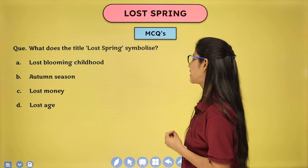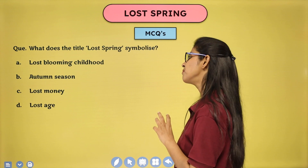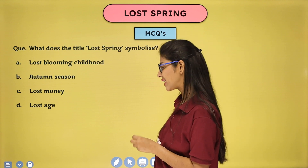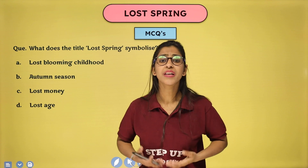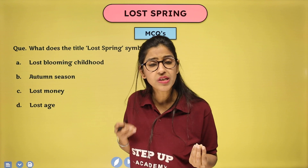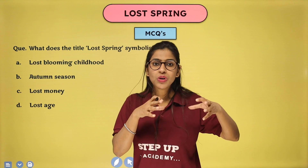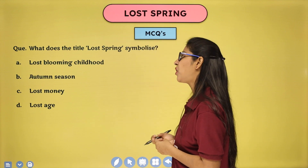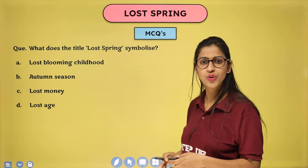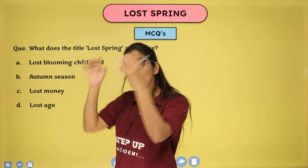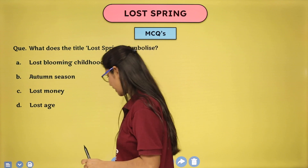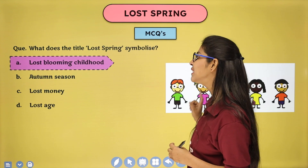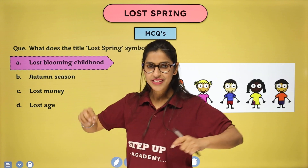What does the title 'Lost Spring' symbolize? Options: lost blooming childhood, autumn season, lost money, lost age. What has been lost? Lost Spring symbolizes lost, blooming childhood. Childhood is always considered as a spring — it burgeoning, blooms, blossoms, beautifies those around it. But all these things are lost when they are taken away from a child, and the child is forced to continue a life they neither want to live nor the work they want to do — by force, for their own survival.